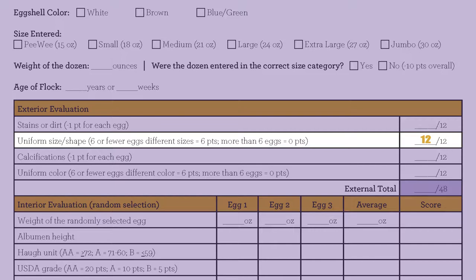If there are six or fewer eggs in the dozen that are not uniform in size or shape, six points are given. If more than six eggs in the dozen are not uniform in size or shape, no points are awarded.